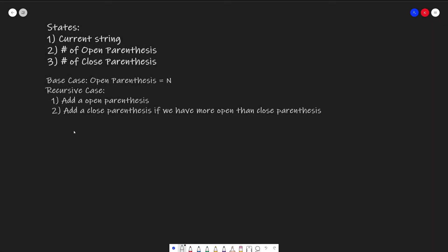To formalize the example that we just went through, whenever we have a recursion problem, we need to define our states, base case, and recursive case. The first state is our current string — the string we are building as we go through our recursion that will eventually become our answer. The second state is the number of open parentheses we have used, so we know when to stop after we open n parentheses. The third state is the number of closed parentheses, because we don't want to close more parentheses than we have open. Our base case is when the number of open parentheses equals n. When we reach three open parentheses, we automatically close them because we know we can't open any more.